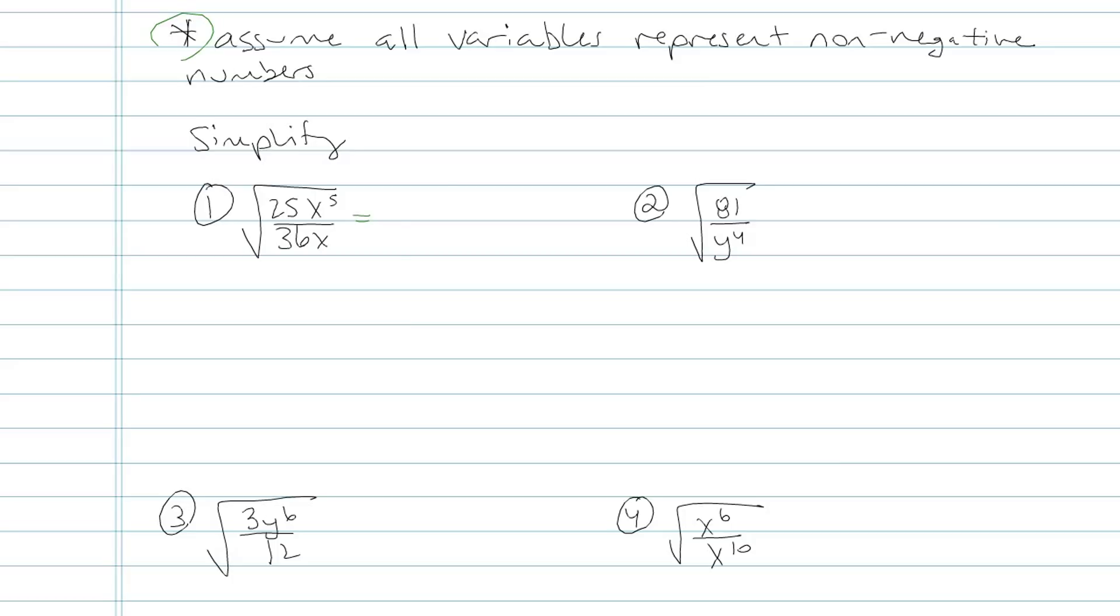Here's what I mean. x to the fifth over x, that's just jumping out at me. It's saying you've got to reduce. So I just can't help myself. I have to make it 25x to the fourth over 36, because now I don't have any x's in the bottom.